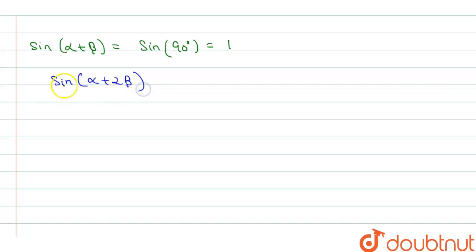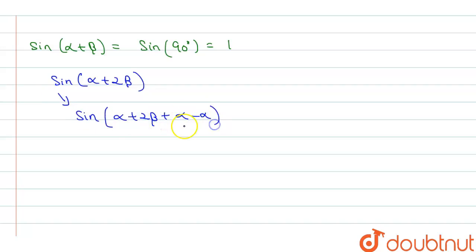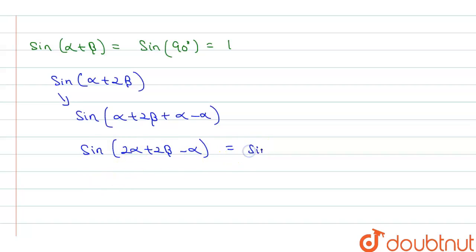We can write sin(α + 2β) as sin(α + 2β + α − α), which equals sin(2α + 2β − α). So we can write this as sin(2(α + β) − α).